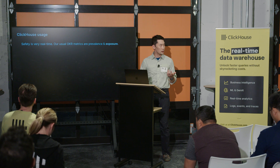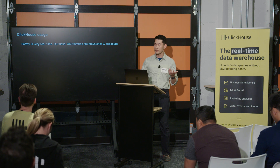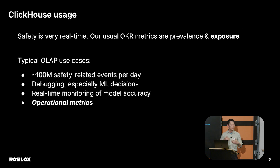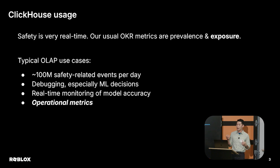Our OKR metrics in safety are mainly prevalence and exposure. Prevalence is the number of bad things on the platform. Exposure is the time and number of people exposed to a bad thing. Real-time detection is extremely important — taking something down an hour later means exposure increased by an hour.